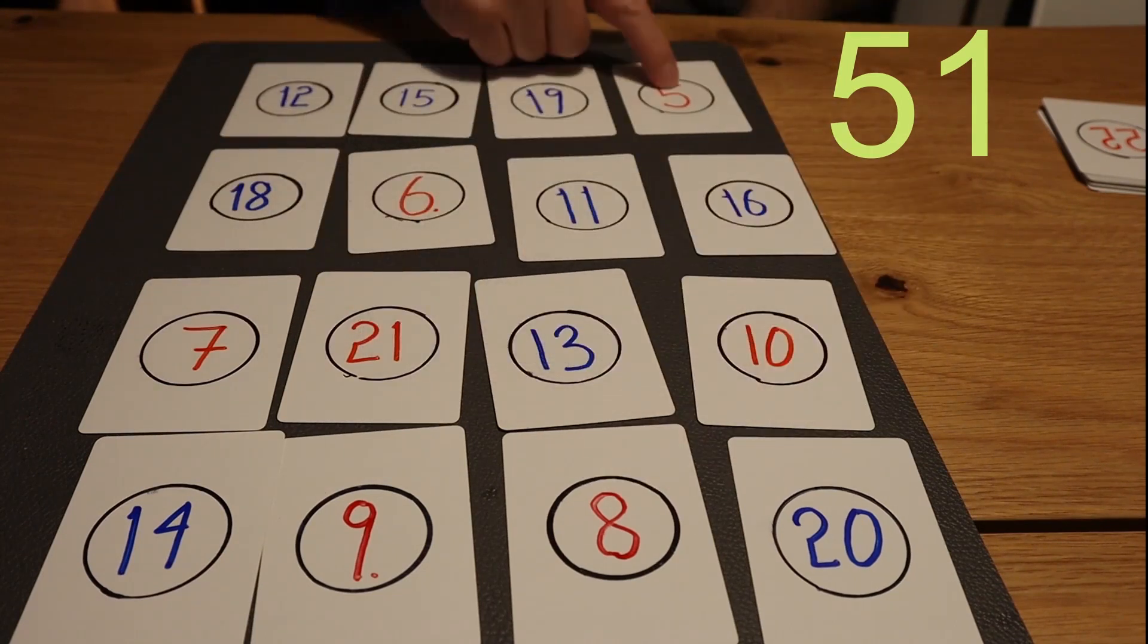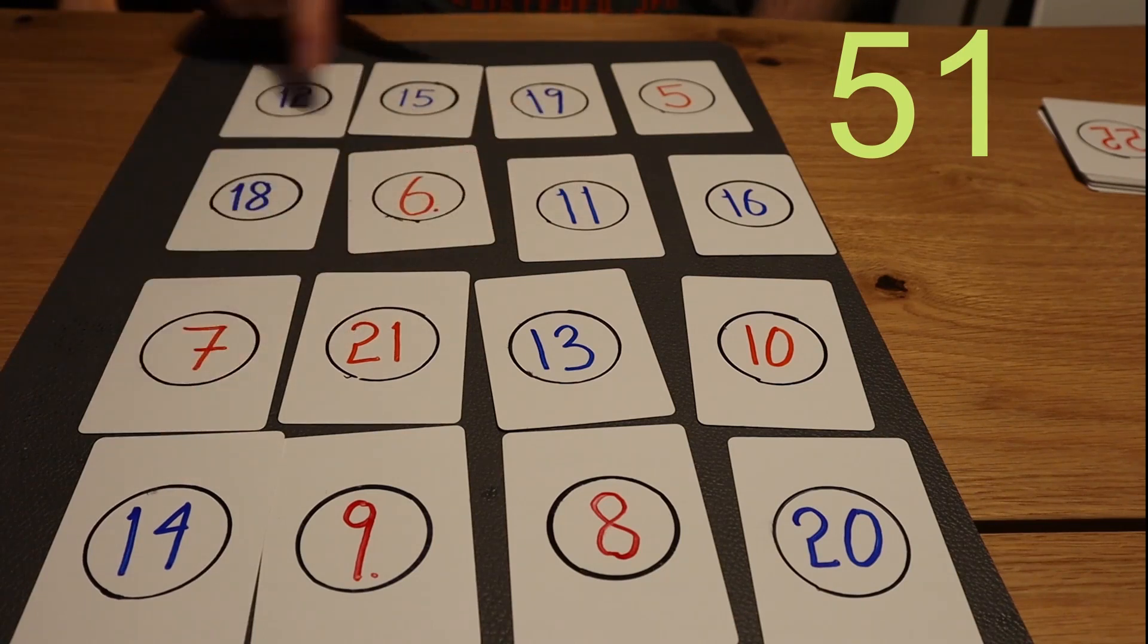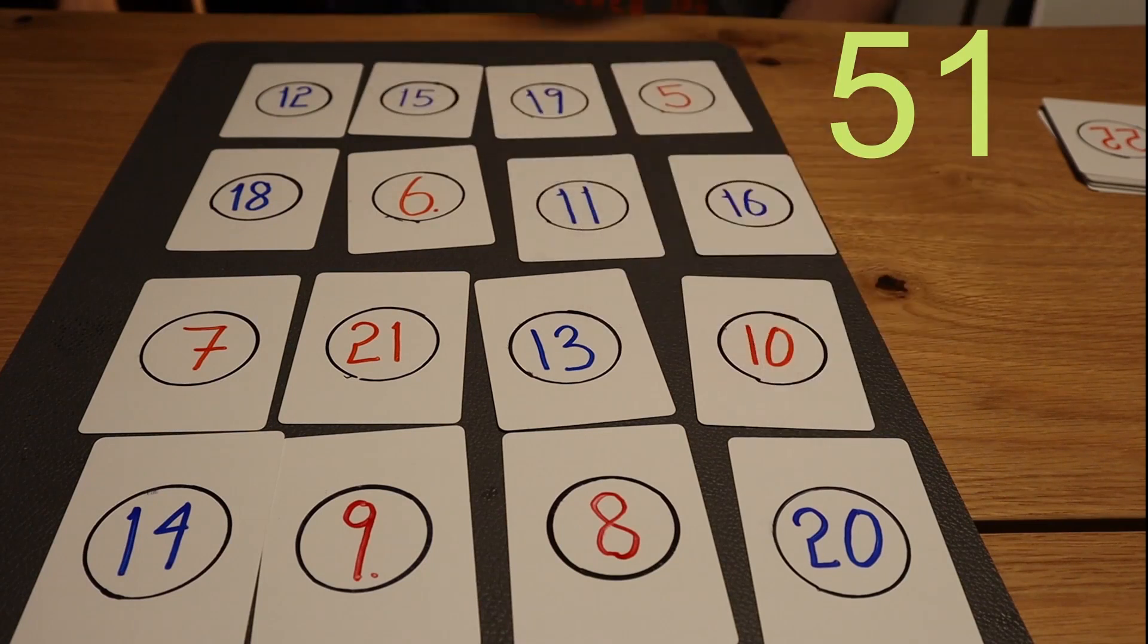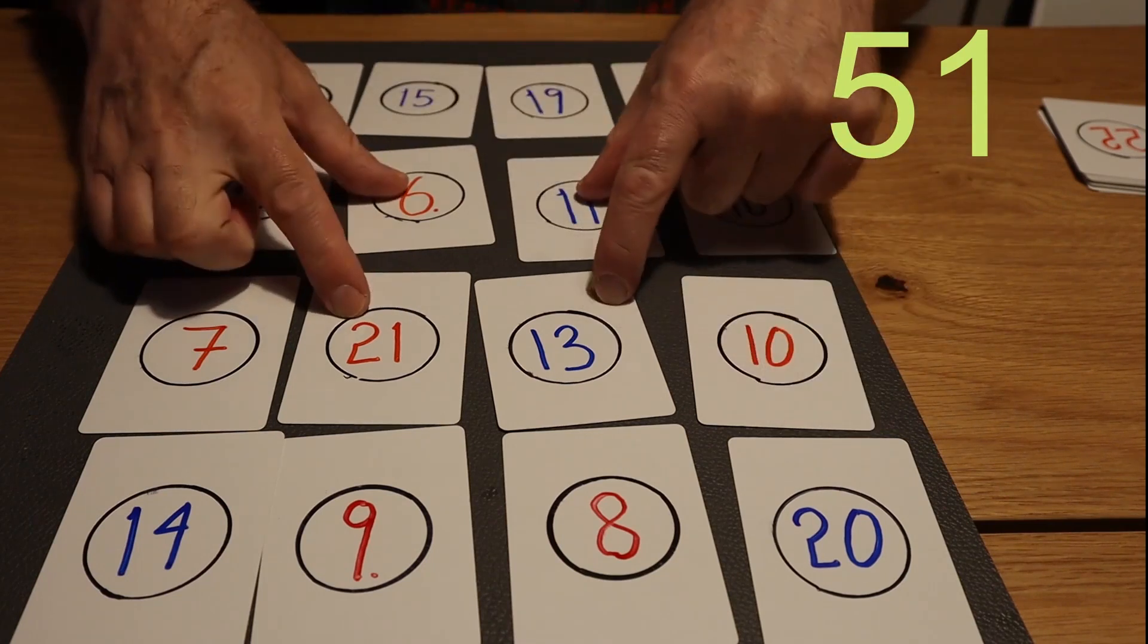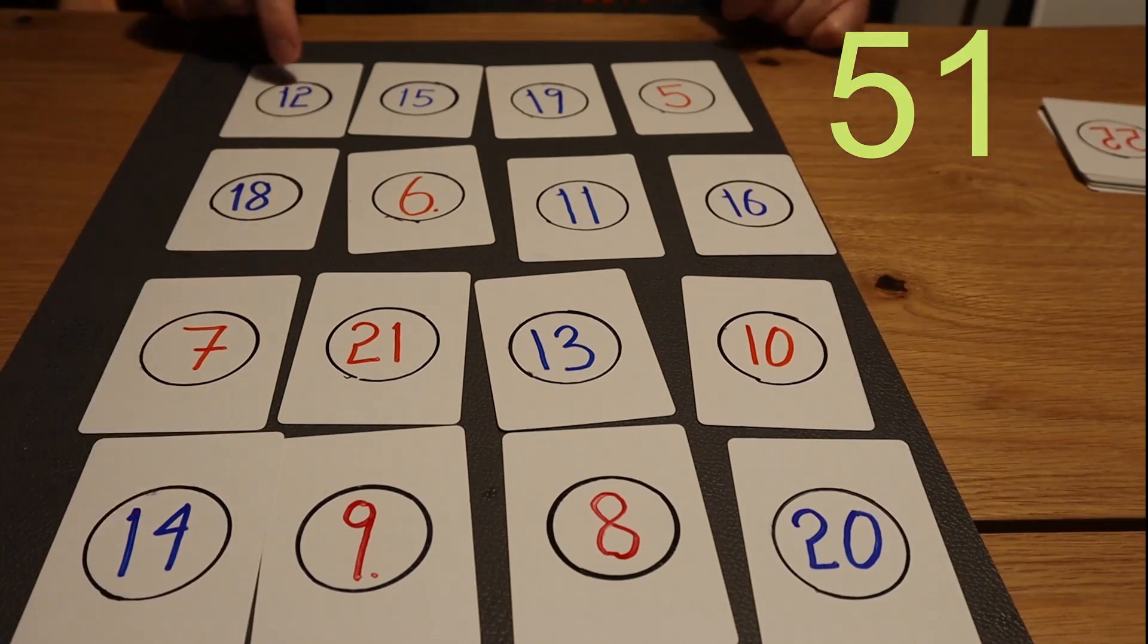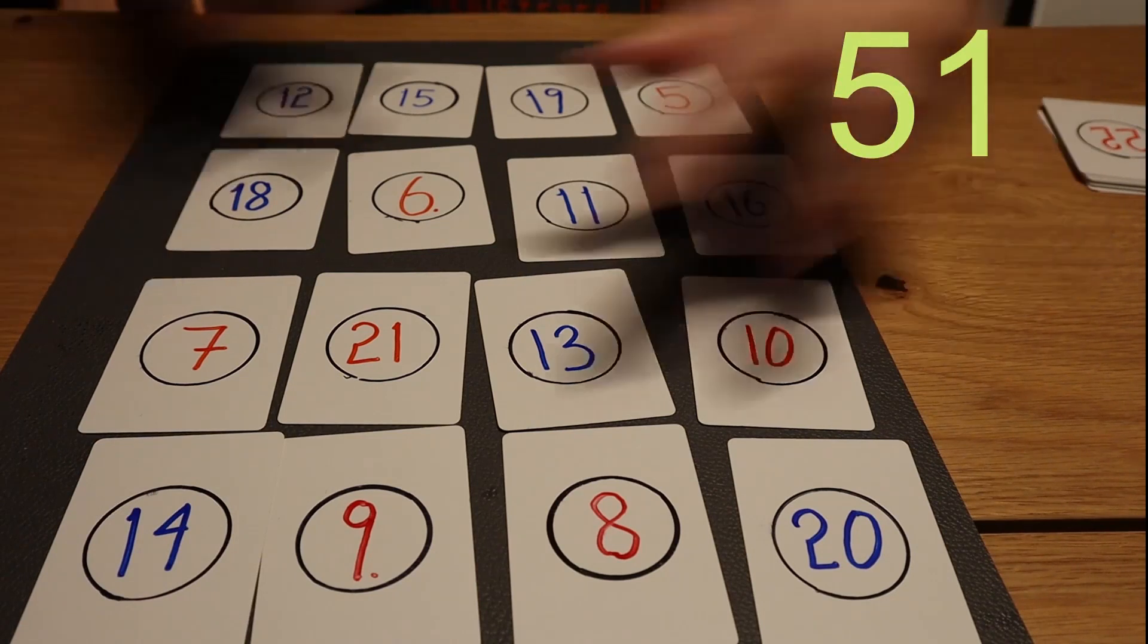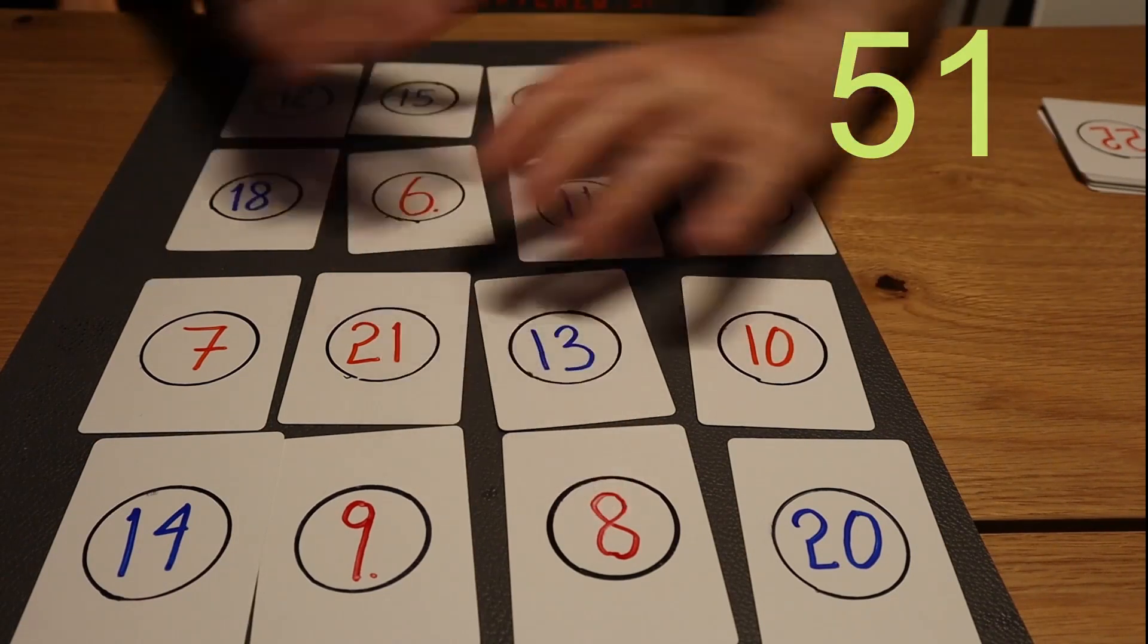If we take this way here, 5, 11, 21, 14 is also 51. 12, 6, 13, 20 is also 51. If we take the center, it's also 51. If we take the corners, 20, 14, 34, 36, 46 and plus 5, that's also 51. And if we take these, it's also 51 and this is also 51. So everything is 51.